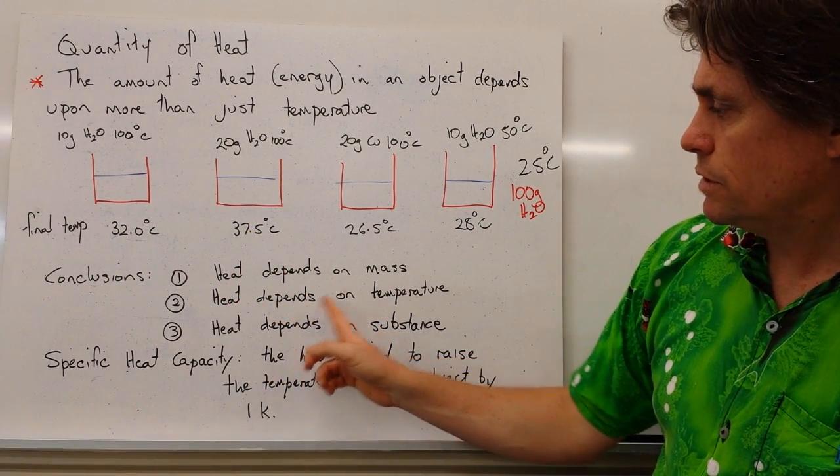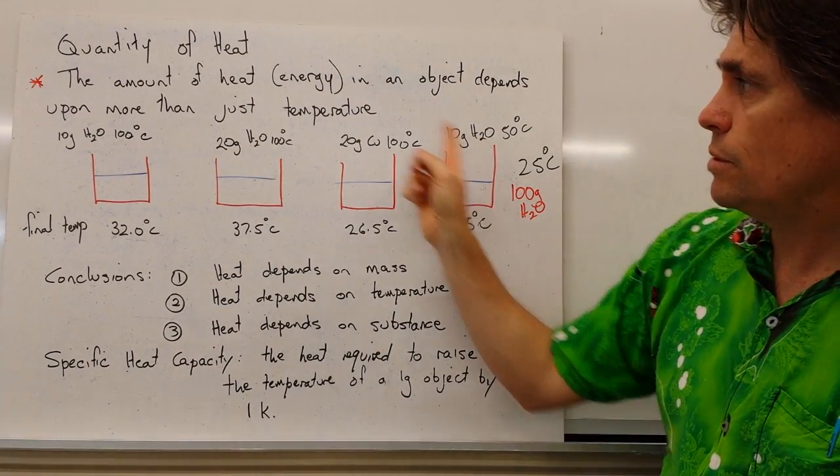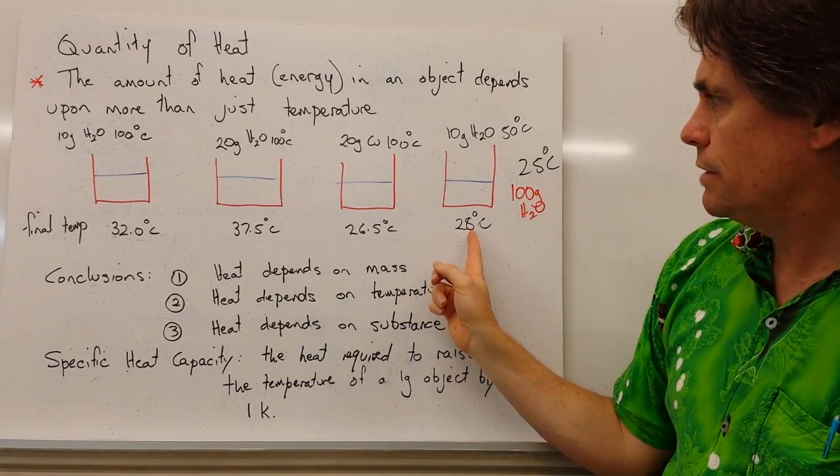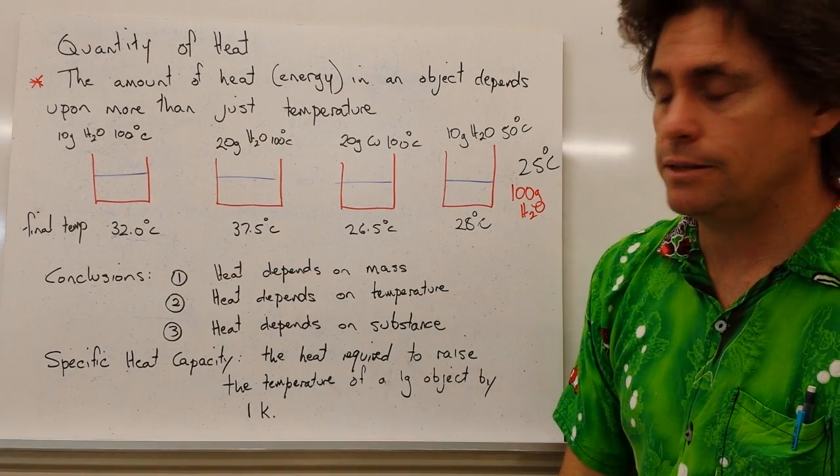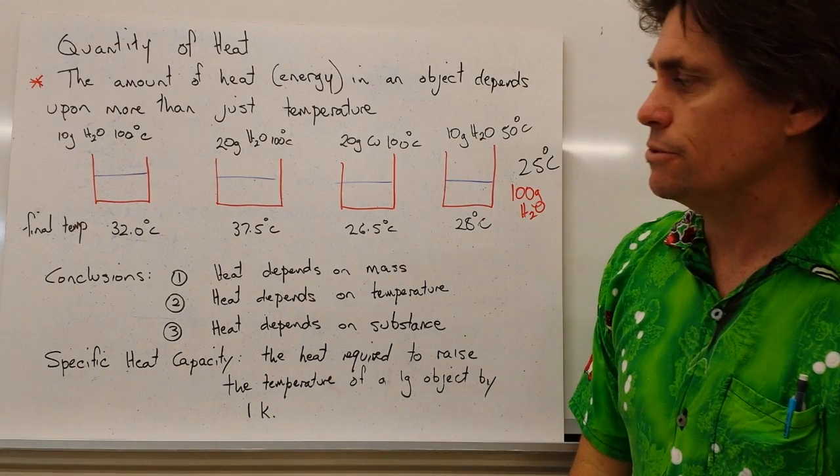The heat also depends on temperature. So from the first to the fourth experiments where we added the same mass, but we changed the temperature, we found that there was a difference in temperature as well. So the lower the mass, the lower the final temperature in this case.